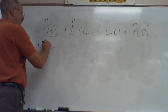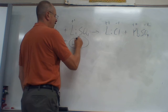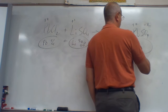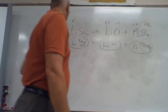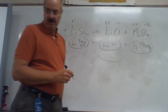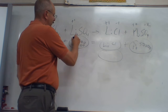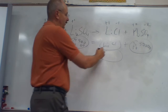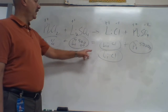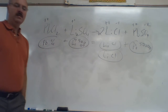So I'm going to balance this. I got Pb and two Cls, plus Li and S and four O's. That's equal to Li and Cl, plus Pb and S and four O's. I got one Pb, one Pb. I got two Cls and only one Cl — this should be two Lis. So now I got two Cls, two Cls, two Lis, two Lis, one S and S, four O's and four O's. There's my final answer — all I need is a two on that guy.